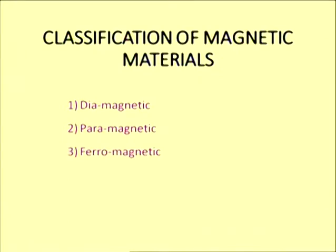On the basis of the alignment of magnetic dipole moments in materials, magnetic materials can be classified into three broad categories: number one, diamagnetic materials; number two, paramagnetic materials; and number three, ferromagnetic materials. We will discuss these three types of materials one by one. Let's start with diamagnetic materials, or diamagnetism in magnetic materials.